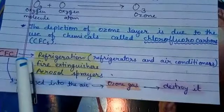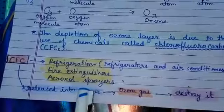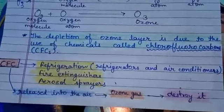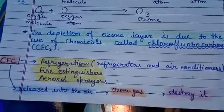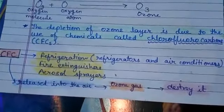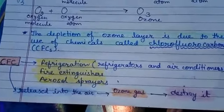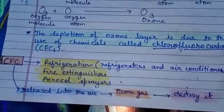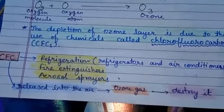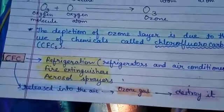Chlorofluorocarbons released into the air react with ozone gas present in the ozone layer and destroy it gradually. Due to this, the ozone layer in the upper atmosphere has become thinner, allowing more ultraviolet rays to pass through it and reach the Earth. Thus, due to the depletion of the ozone layer caused by chlorofluorocarbons, more ultraviolet radiation reaches the Earth.